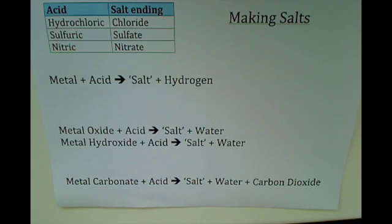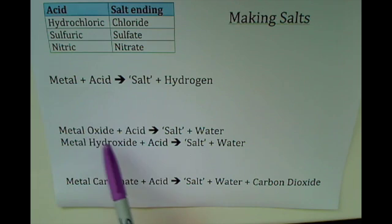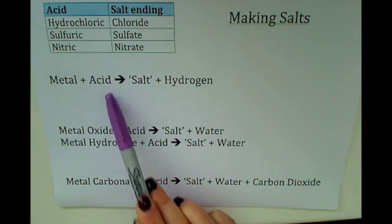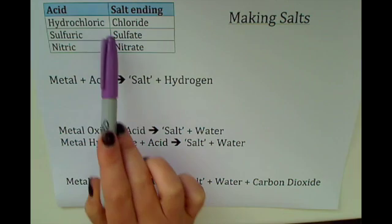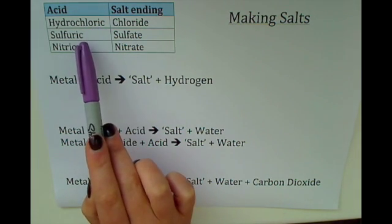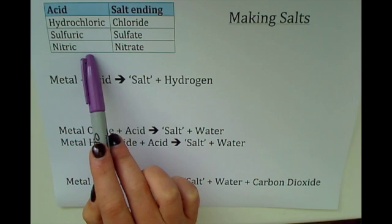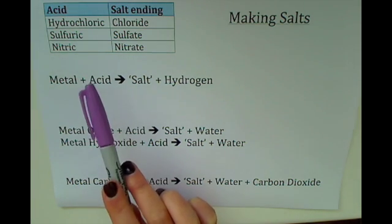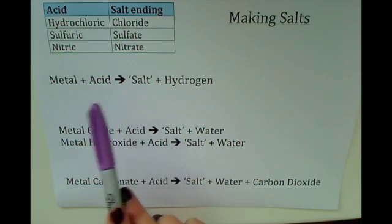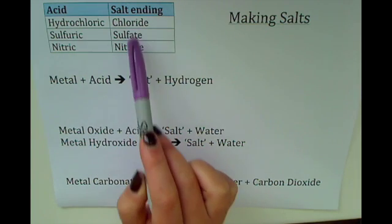This video is about making salts. Salts are made in reactions where metals, metal oxides or hydroxides, or metal carbonates are reacted with an acid. There are three different types of acid that you would commonly use in the lab, and different acids make different salts.